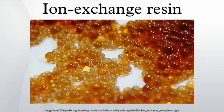Four main types of ion exchange resins differ in their functional groups: strongly acidic, typically featuring sulfonic acid groups, e.g. sodium polystyrene sulfonate or polyAMPS; strongly basic, typically featuring quaternary amino groups, e.g. trimethylammonium groups; weakly acidic, typically featuring carboxylic acid groups; and weakly basic, typically featuring primary, secondary, and tertiary amino groups, e.g. polyethylenimine.